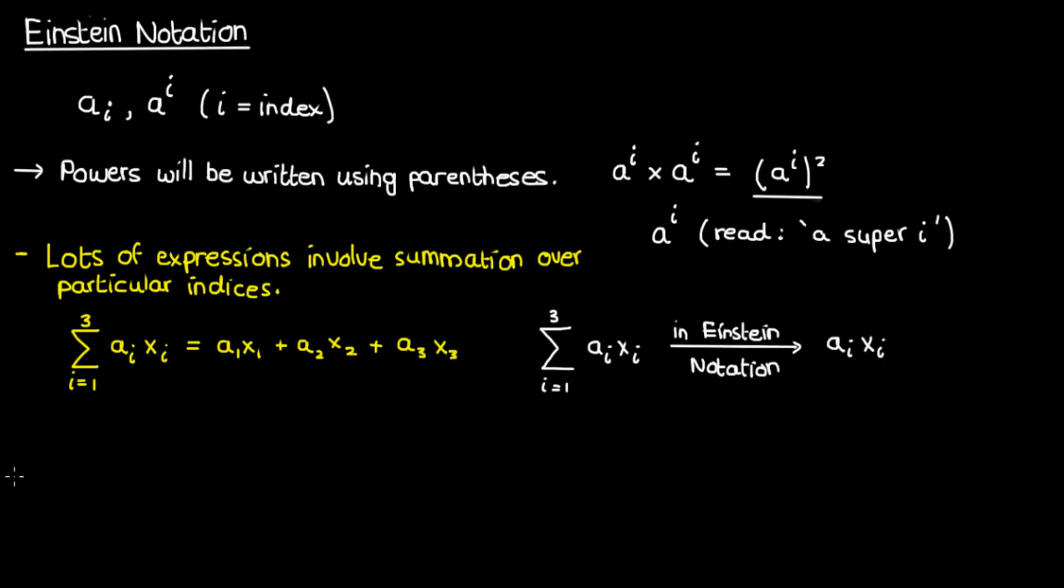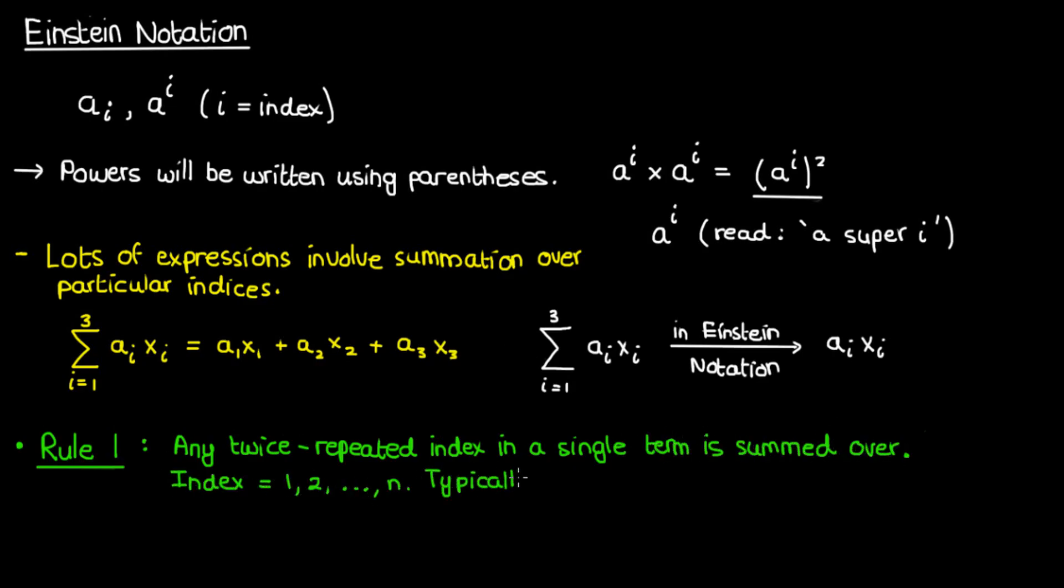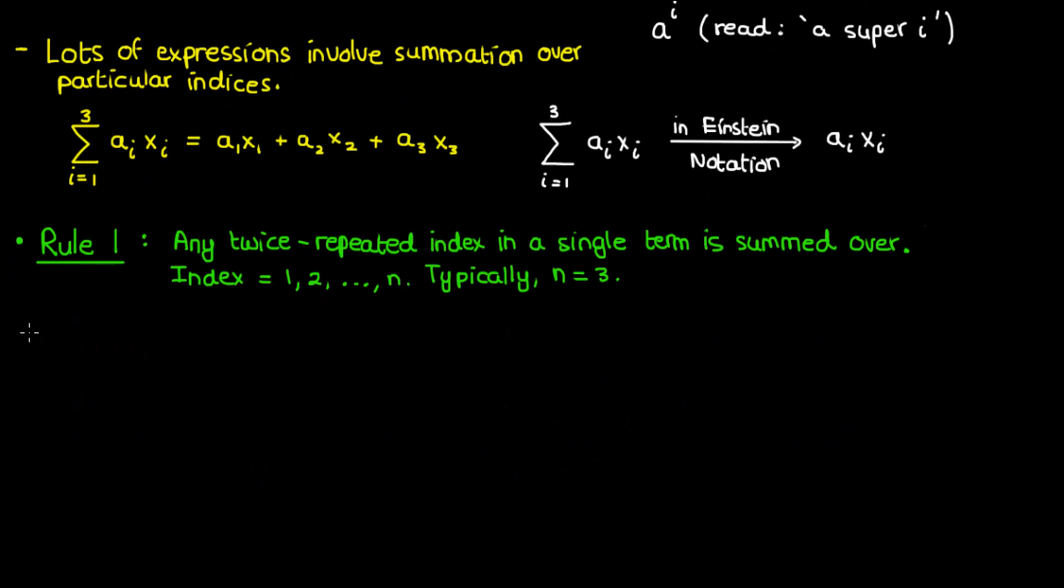And this brings me to the foundational rule of Einstein notation, which is that if you have a single term, then any index that is repeated twice is summed over the positive integers, usually from 1 to 3. It's 1 to 3 mainly because there are three dimensions, and we tend not to go higher than that for the most part. For example, if we have aij times bj, then according to rule 1 of Einstein notation, this term would be equivalent to a1b1 plus a2b2 plus a3b3.